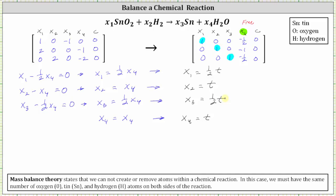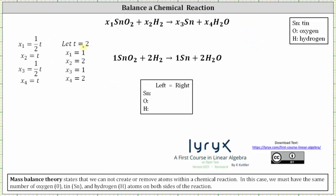All these equations must be true in order to balance the chemical reaction. Let's take a look at an example. Let's say we let t equal two. So if we substitute two for t in all the equations, we get x sub one equals one, x sub two equals two, x sub three equals one, and x sub four equals two. And if we substitute the values back into the reaction, where we have the variables x sub one, x sub two, x sub three, and x sub four, we get this chemical reaction here, which is now balanced. Let's just verify we have the same number of atoms of tin, oxygen, and hydrogen on both sides of the reaction.